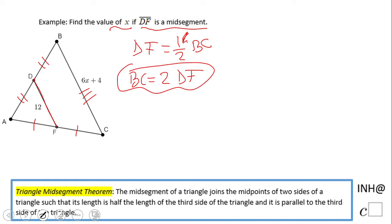BC is 6x plus 4 and DF is 12. So we end up with a simple equation: 6x plus 4 equals 24.